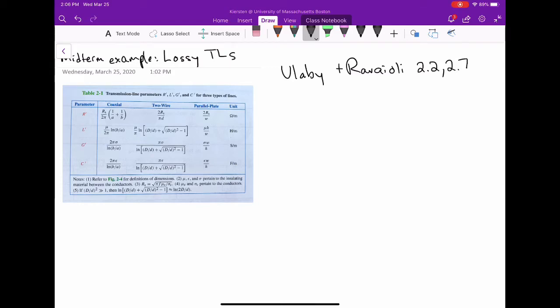We're going to do another midterm example problem, this time on transmission line per unit length parameters and lossy transmission lines. We're doing problems 2.2 and 2.7 out of the textbook because they're related to each other.